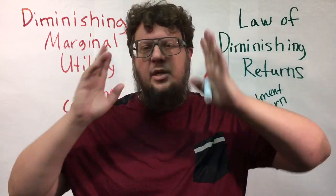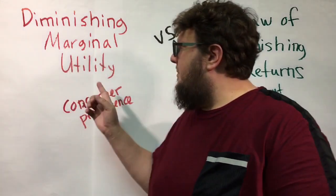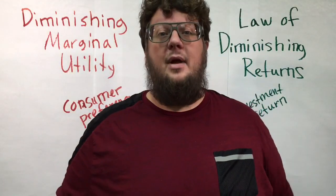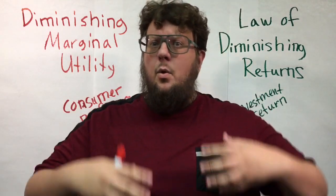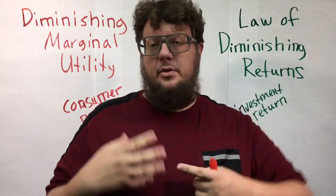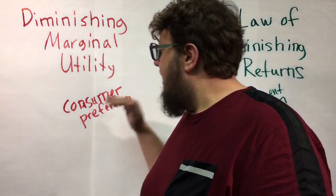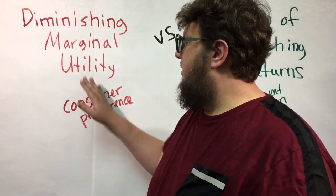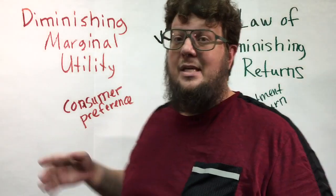I'll go over each one real quick and then tell you the easy way to tell the difference. Diminishing marginal utility — I like to use the example of doughnuts. Utility is the satisfaction or usefulness you get from consuming or using a product, and diminishing marginal utility has to do with consumer preference.